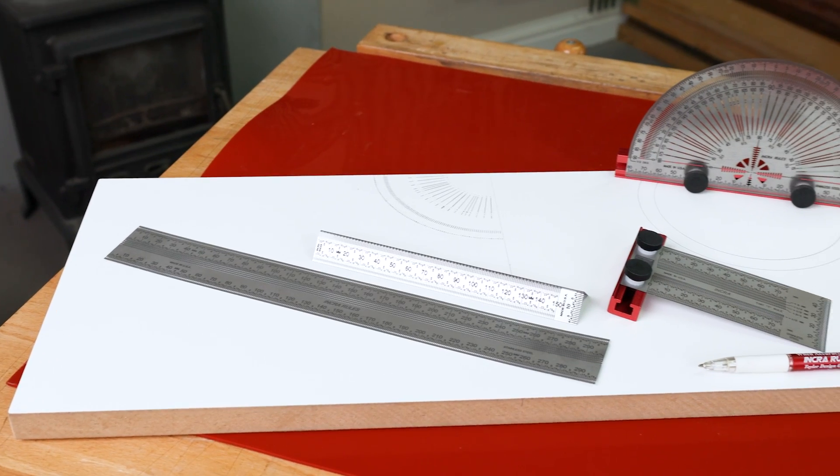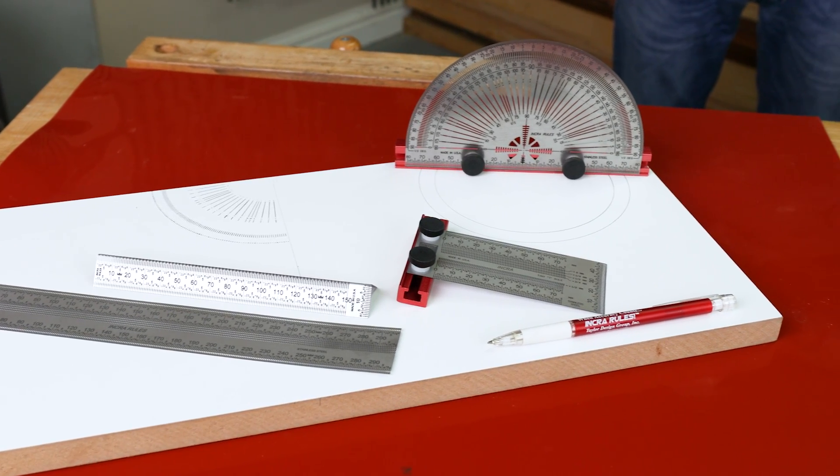To buy an Inkra Protractor, T-Rule, Ben Rule or Precision Rule look at us at woodworkersworkshop.co.uk. Check out our social media channels or for any in-depth videos on any of our products follow us on YouTube.